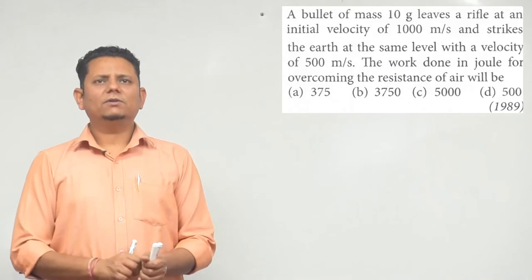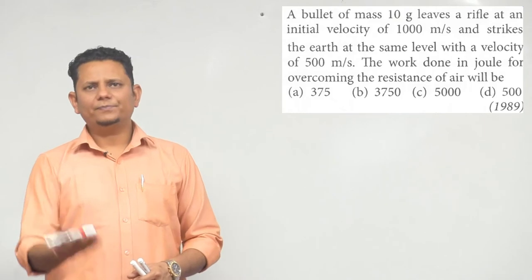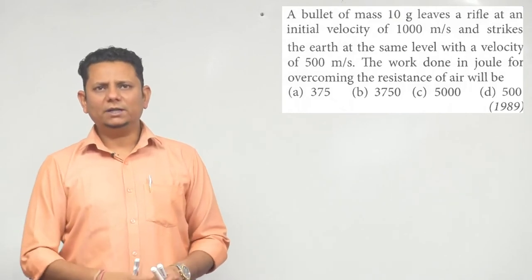Our next question says: A bullet of mass 10 grams leaves a rifle at an initial velocity of 1000 meters per second and strikes the earth at the same level with a velocity of 500 meters per second.